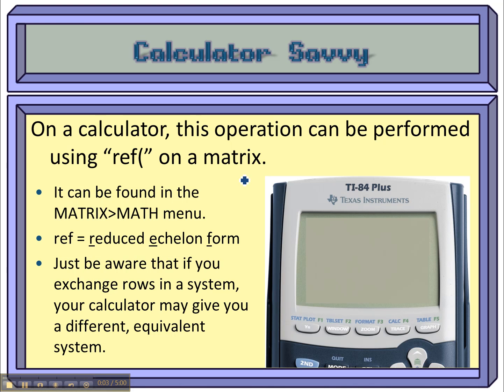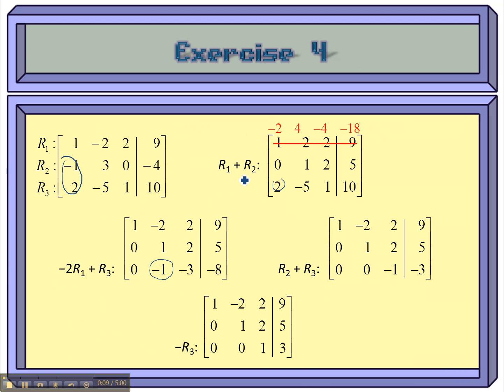All right, so everything that we had just done by hand can be done on a calculator really fast. So all of this stuff, we can put into the calculator. We actually just put in the original matrix, and then we can get something equivalent to this last one.